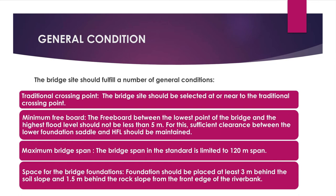The freeboard between the lowest point of the bridge and the highest flood level should not be less than 5m. Sufficient clearance between the lower foundation saddle and HFL should be maintained. The bridge span is limited to 120m. Foundations should be placed at least 3m behind the soil slope and 1.5m behind the rock slope from the front edge of the river bank.